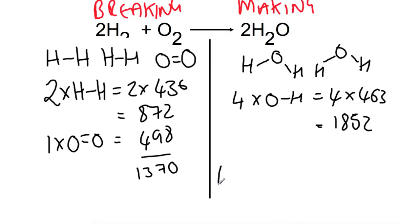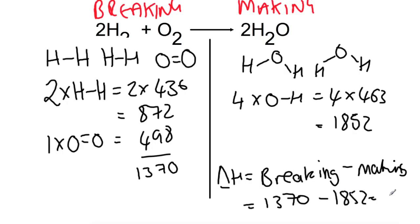To work out the delta H, we do breaking minus making. So we have 1370 minus 1852 to give us an energy change of minus 482 kJ per mole.